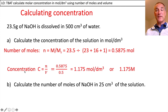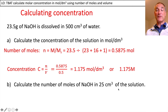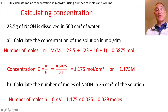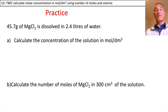Next, the easier bit: concentration is moles divided by decimetres cubed, giving that value, which can also be quoted as 1.175 molar. Then calculate the number of moles of sodium hydroxide in 25 centimetres cubed of solution. Using moles equals concentration times volume, convert centimetres cubed to decimetres cubed by dividing by a thousand. Pause the video — you'll need your periodic table from your revision guide — and then work out the practice questions.